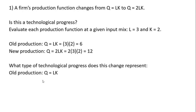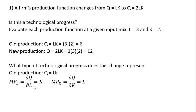With our old production function, we're going to calculate the marginal rate of technical substitution. We'll get the marginal product of labor and marginal product of capital, both derived by taking partial derivatives. The marginal product of labor is the partial derivative of the production function with respect to labor, giving us K. And the marginal product of capital is just L. Forming the marginal rate of technical substitution — marginal product of labor divided by marginal product of capital — we get K divided by L.